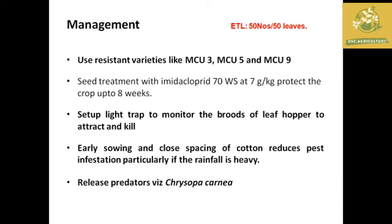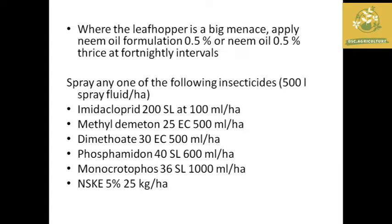Management includes use of resistant varieties like MCU 3, 5, and 9, setting up light traps to monitor and kill leaf hoppers, early sowing and close spacing of cotton to reduce infestation in heavy rainfall areas, and release of predators like Chrysopa cornea. Chemical sprays include imidacloprid, methyl demeton, dimethoate, phosphamidon, monocrotophos, and neem seed kernel extract.